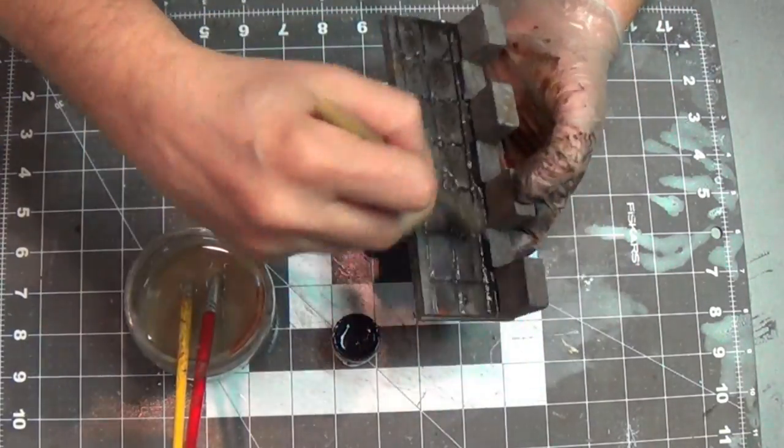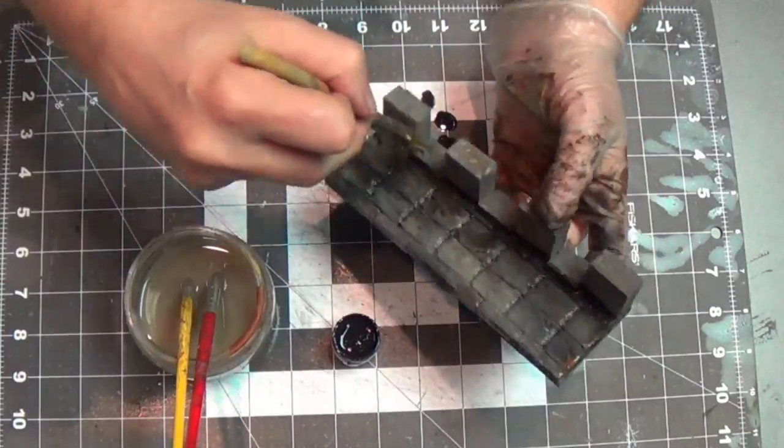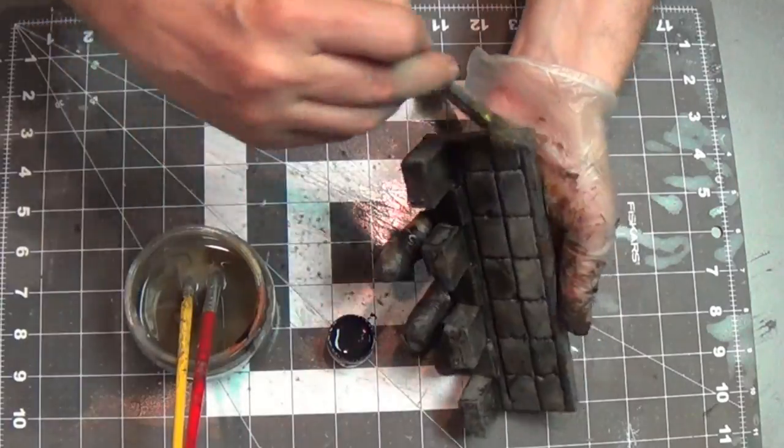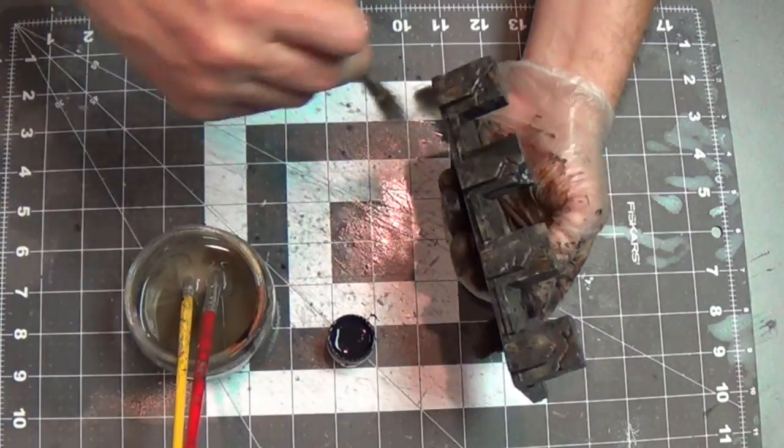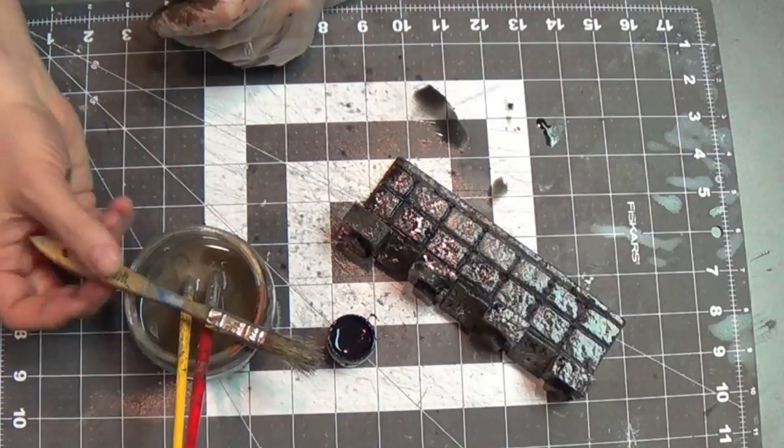Now I'm going to put some black on here. And this is just a wash of black, just very wet black. And we'll let that dry up and I'll put some highlights on it. We'll be done.